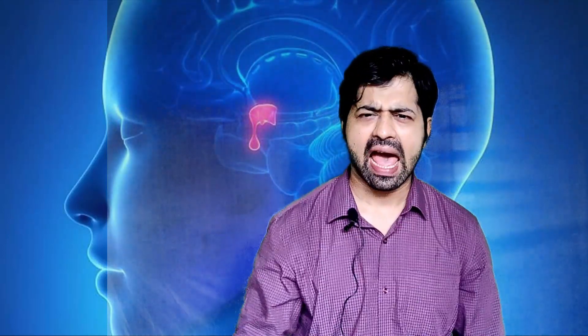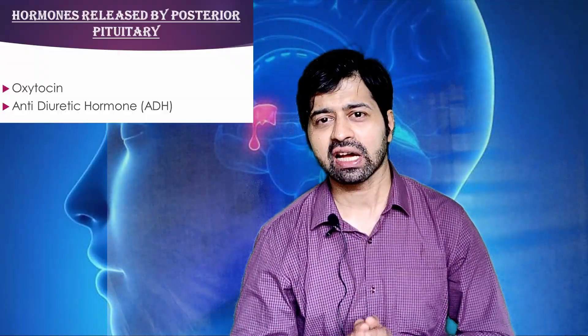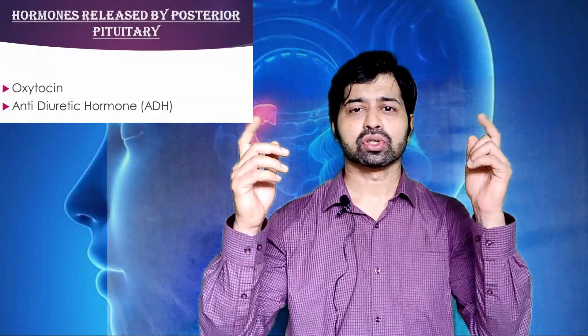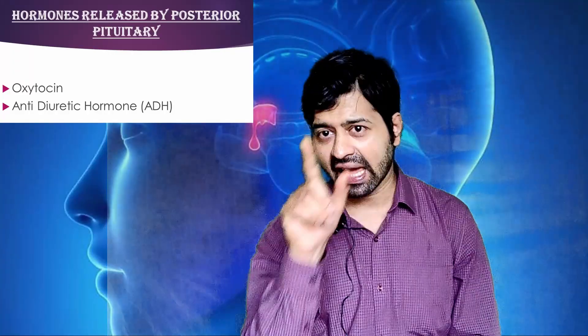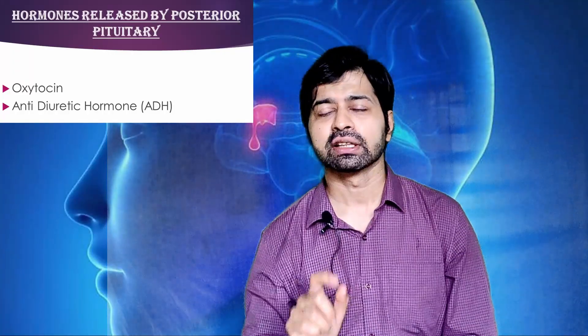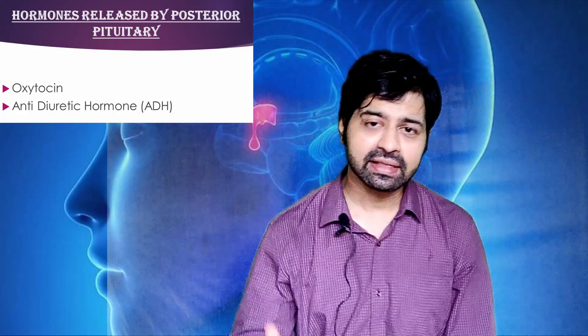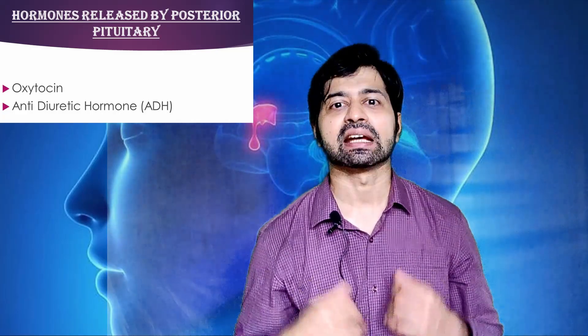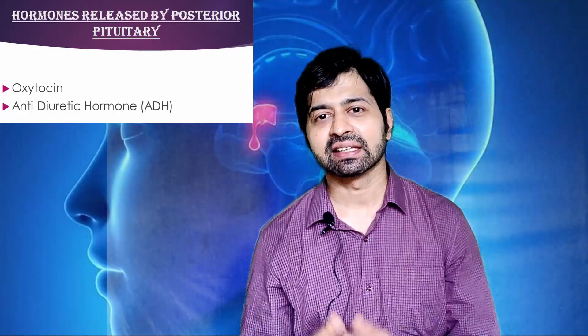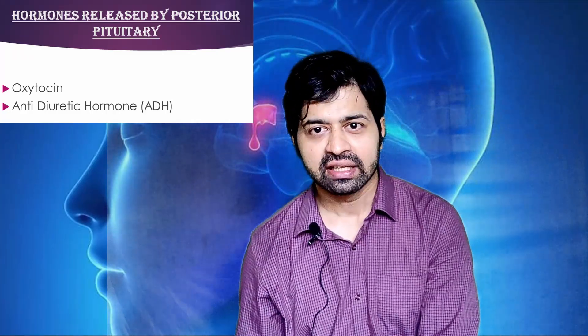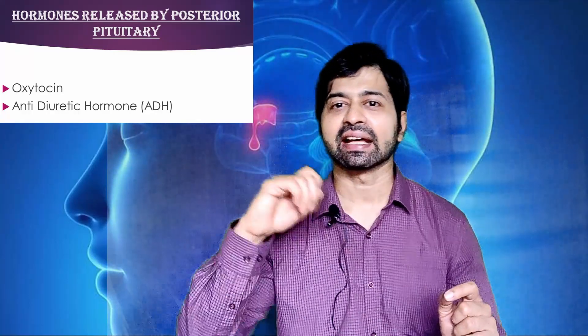The posterior pituitary as such does not synthesize any hormones, but it simply stores the hormones which are produced or synthesized in the hypothalamus and carried to the posterior pituitary through the pituitary stalk. When the posterior pituitary is stimulated, it releases these stored hormones, that is oxytocin and ADH or antidiuretic hormone.